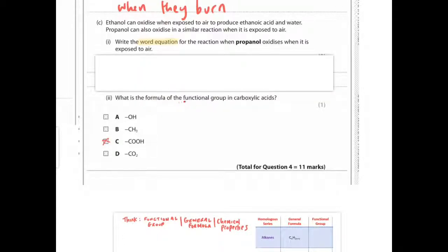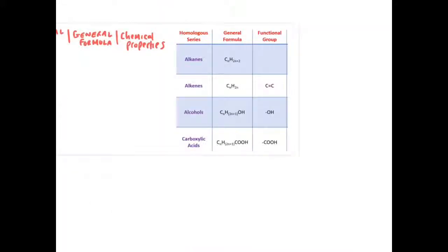Finally, what is the formula of the functional group in carboxylic acids? It would be COOH. As you can see from this table here. Quite a useful table. We can memorize it. Thank you.